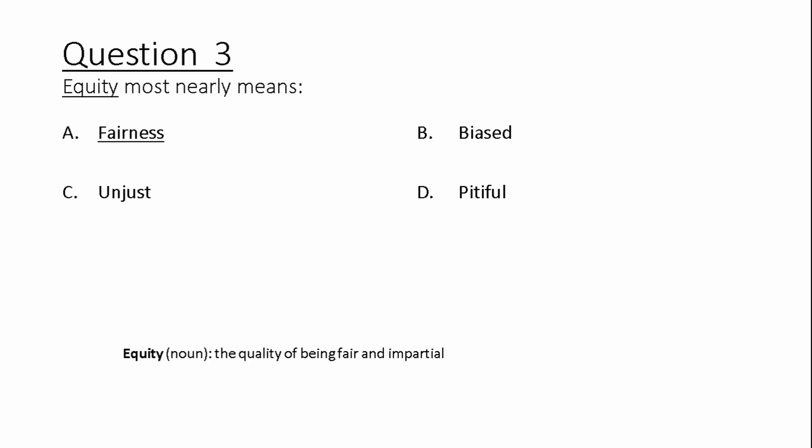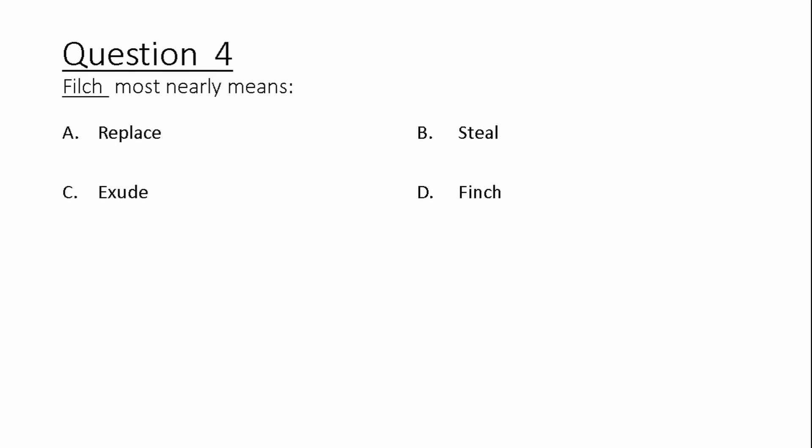Equity most nearly means: A) fairness, C) unjust biased, D) pitiful. Equity: the quality of being fair and impartial. Question 4. Filch most nearly means: A) replace, C) exude, B) steal, D) finch.